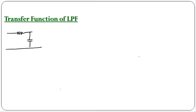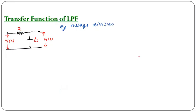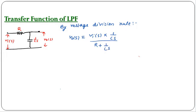Here we have a resistor R and a capacitor with impedance 1/(Cs), and we are taking the output across the capacitor. The input is Vi(s) and the output is V0(s). We have to find the output voltage which is the voltage across the capacitor, so we can use the voltage division rule. V0(s) equals Vi(s) multiplied by the impedance of the capacitor, which is 1/(Cs), divided by the sum of both impedances, that is R plus 1/(Cs).